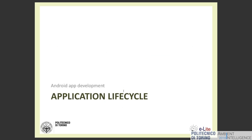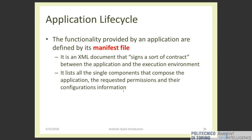We have seen the platform, the architecture, and some concepts about Android applications. Now let's look at the application lifecycle — the process that goes from the user tapping the application icon to the execution of the application. When we create an application we can create as many components as we want, and we provide a manifest file that lists all these components and the required permissions. To be instantiated, a component must be declared in the manifest file.